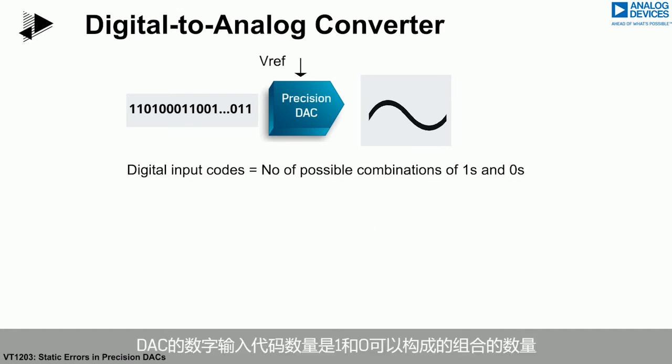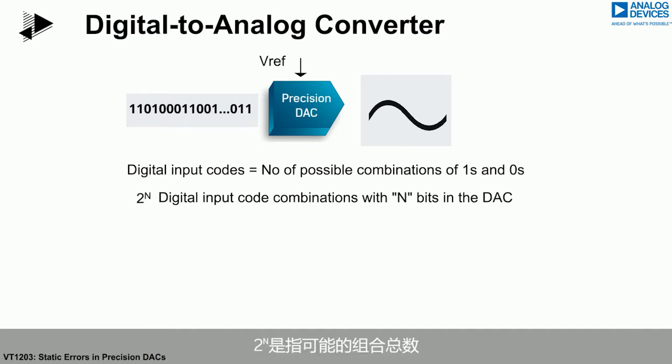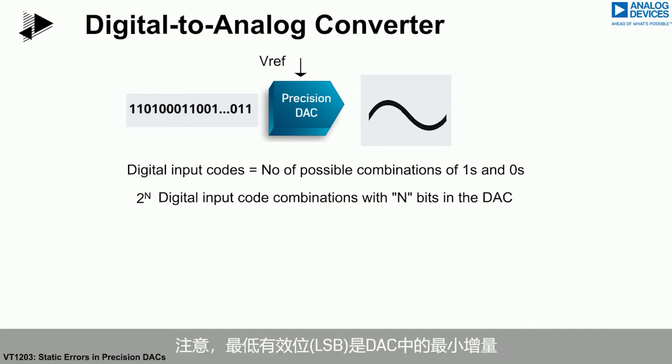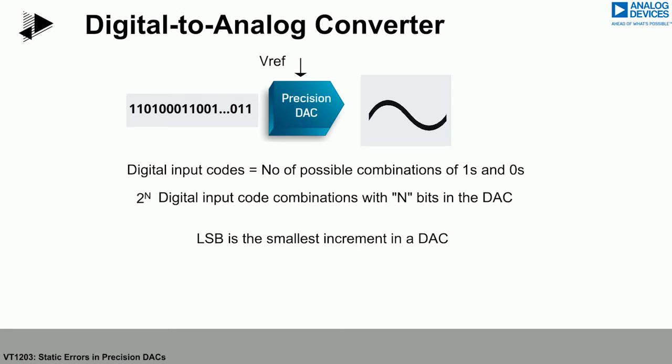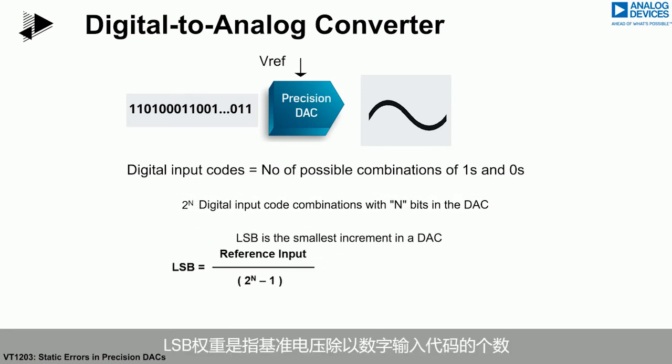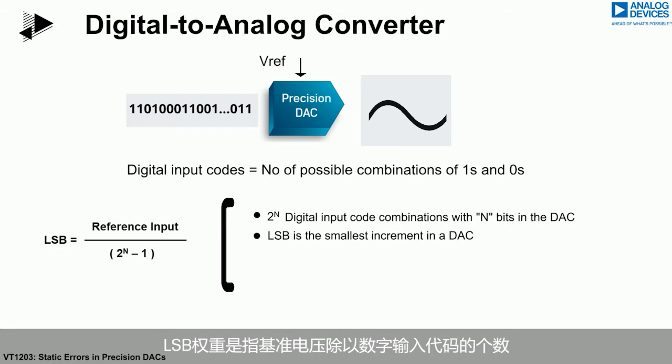The number of digital input codes of a DAC is the number of possible combinations of ones and zeros. Two to the n is the total number of possible combinations, where n represents the number of bits. The least significant bit, or LSB, is the smallest increment in a DAC. The LSB weight is calculated as the reference voltage divided by the number of digital input codes.